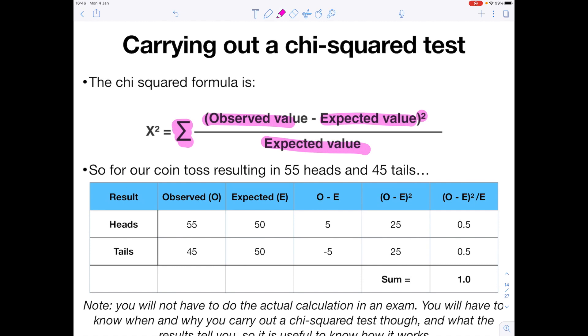So going back to our flipping a coin example, we know from the information on the previous slide that the observed number of heads was 55. The expected number was 50, so if we do observed value minus expected value we get a value of 5. If we square that we get a value of 25 and then if we do that number divided by the expected value which we remember was 50, we get 0.5 as our answer.